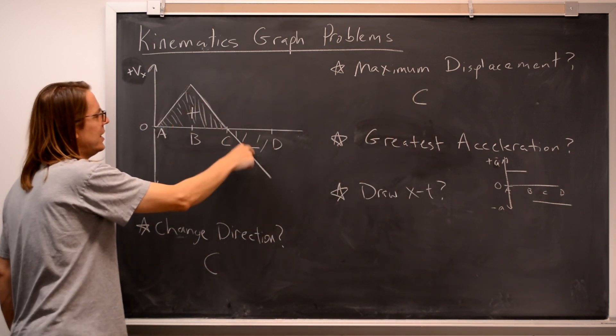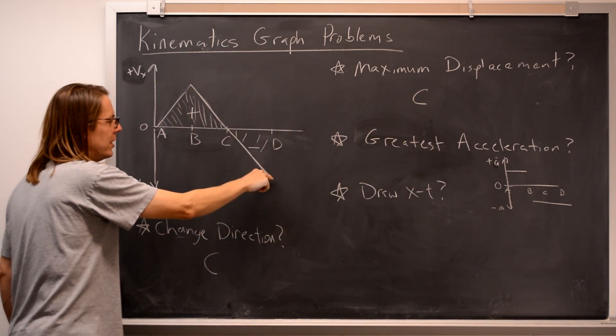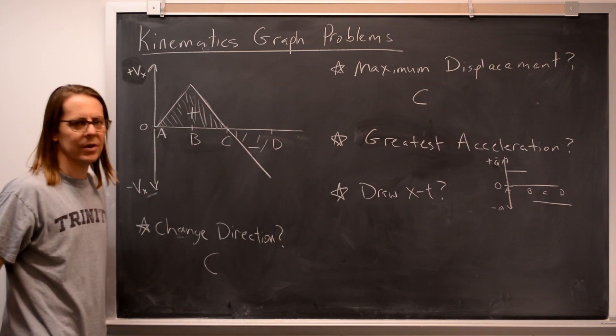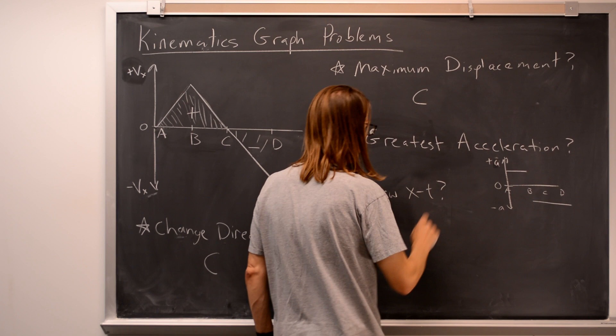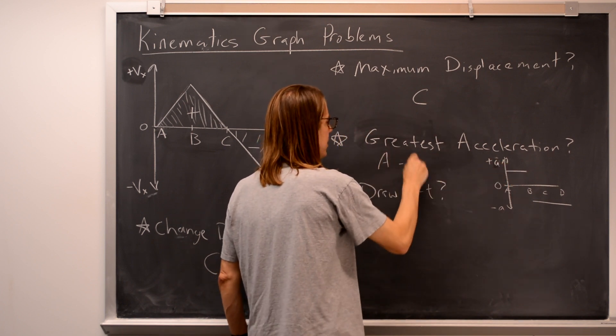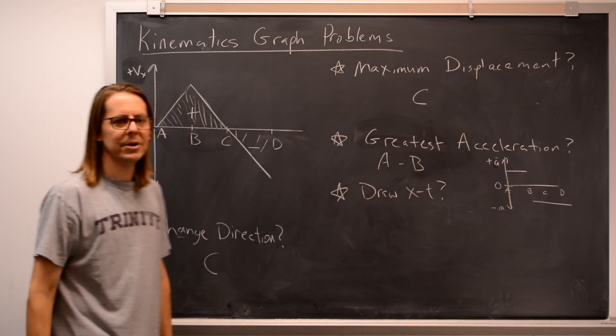Even though the velocity is positive and negative, it's decelerating the whole way, because it's the slope that tells you the acceleration. So the answer is in the range A to B. So the greatest acceleration is between A and D.